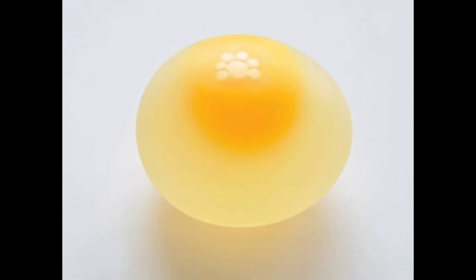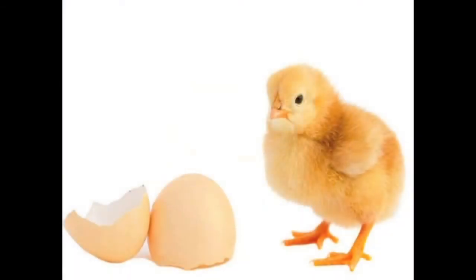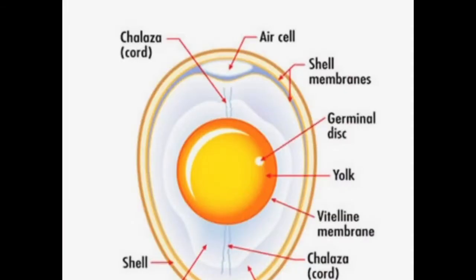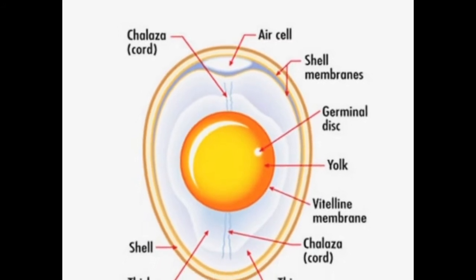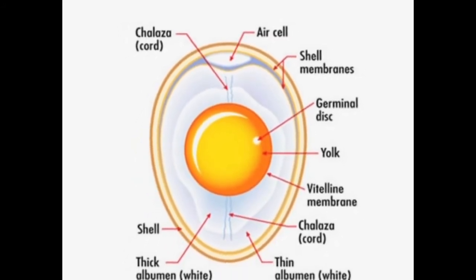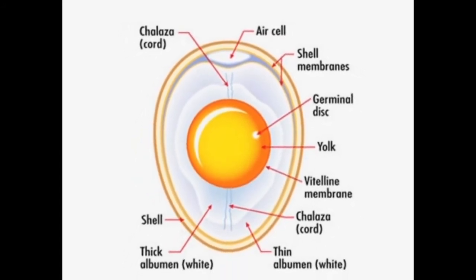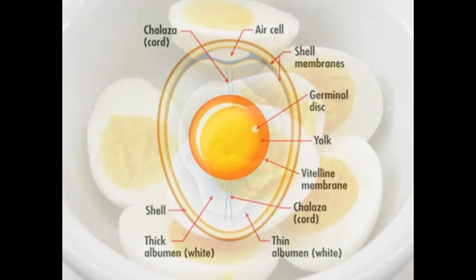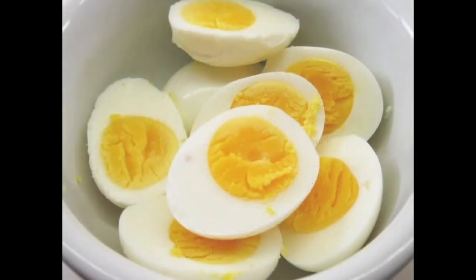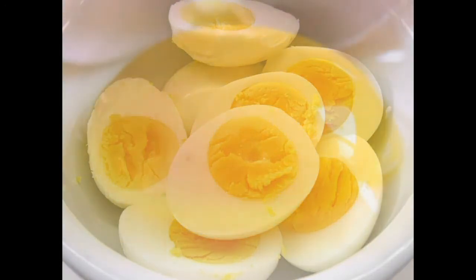The egg yolk carries a small germ spot or germinal disc which, under suitable conditions, develops into a chick. Egg is an excellent source of protein. The biological quality of egg protein is highest among all the proteins and it is considered as a complete protein.